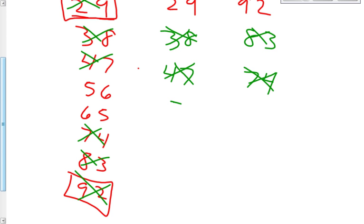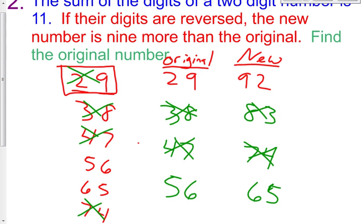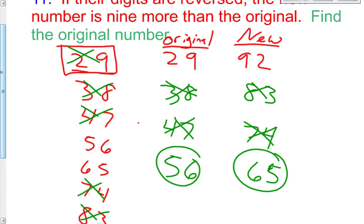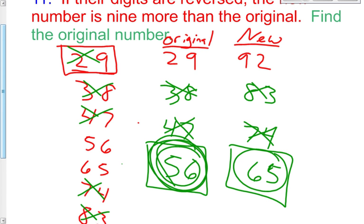So is it 56 and 65? It has to be really because it's our last possibility. But let's just make sure. The new number 65 is nine more than the original 56. Is 65 nine more than 56? Yes, you found your pair. Find the original number. The original number is the one that was not reversed. It's our 56. So this is the answer that you're going to want for Excel math. 56.